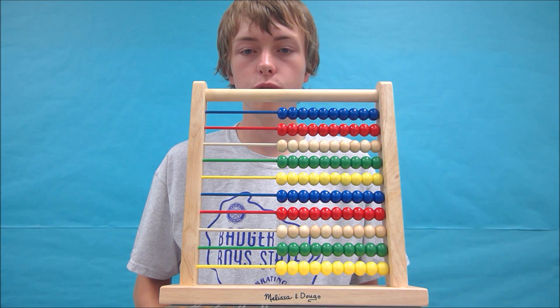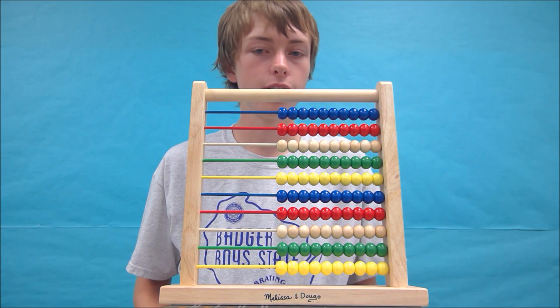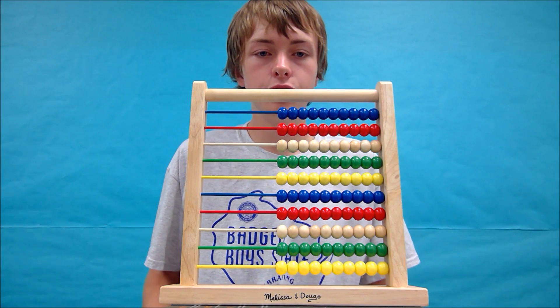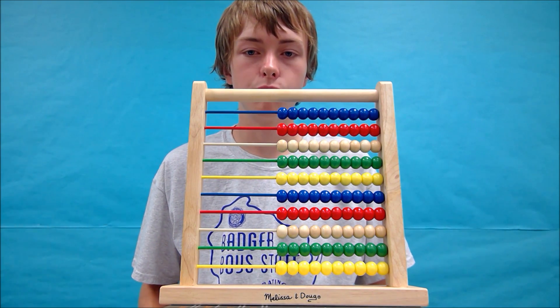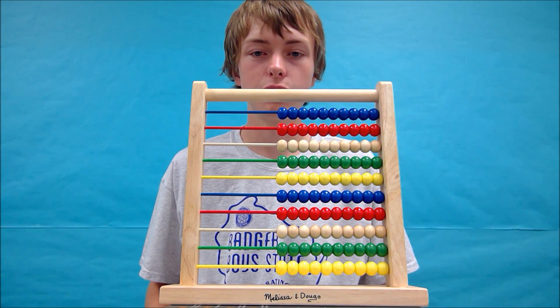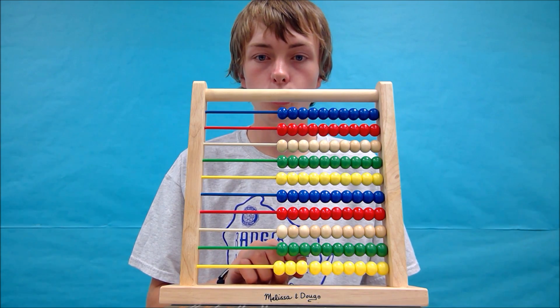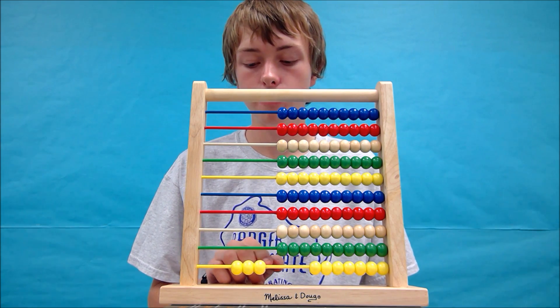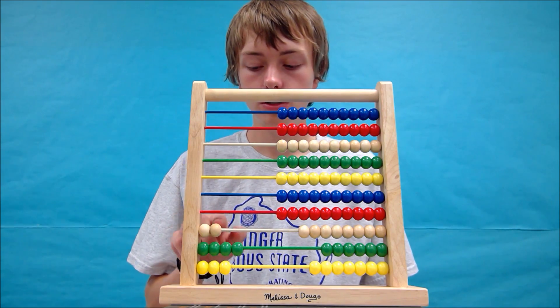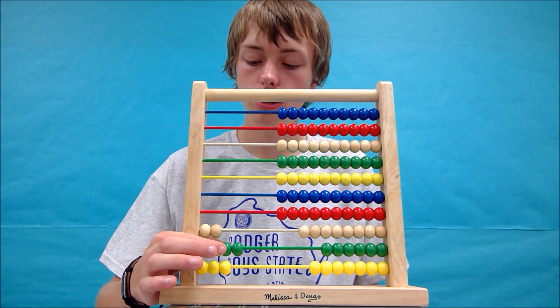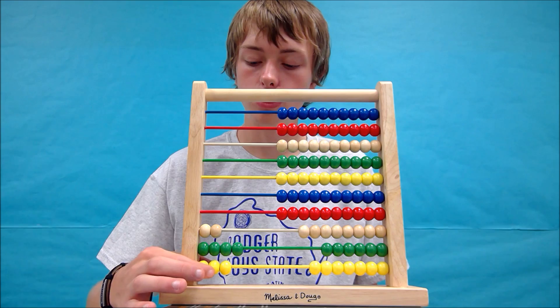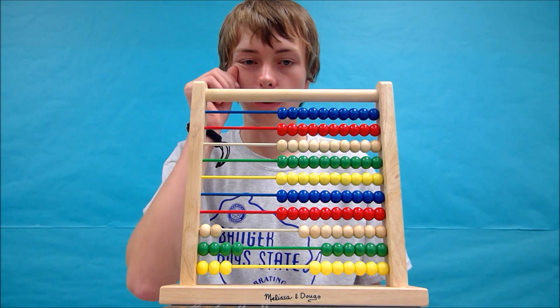We're going to start by adding 243 plus 124. Like we did in the single digit and double digit videos, we will start by forming the first number, which in this case is 243. Starting at the bottom, if it's easier, 3, 4, 2. So we have 1, 2, 1, 2, 3, 4, 1, 2, 3. 243 right there.